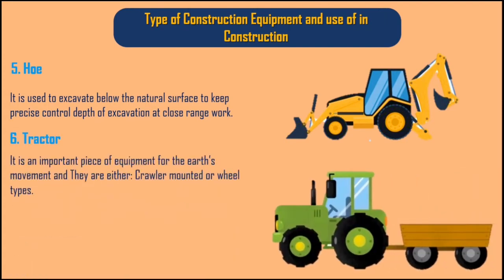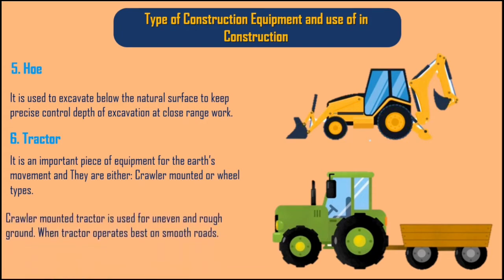6. Tractor. It is an important piece of equipment for earth movement and they are either crawler mounted or wheel types. Crawler mounted tractor is used for uneven and rough ground, while wheel type tractor operates best on smooth roads.